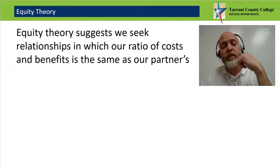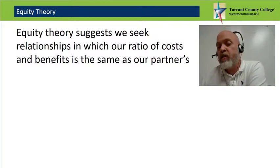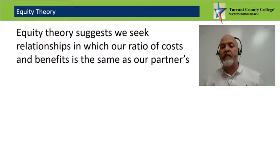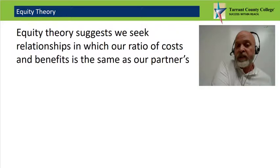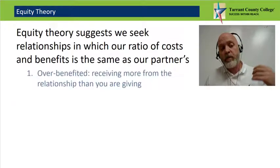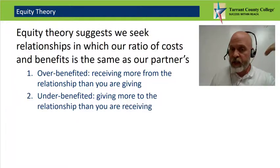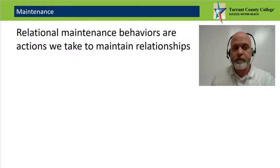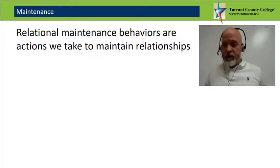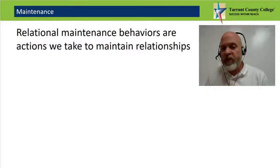Equity Theory also seeks to explain how we form and maintain social relationships. It borrows the concepts of costs and rewards from social exchange theory and extends them by defining a good relationship as one in which your ratio of costs to rewards is equal to your partner's. You can be over-benefited — receiving more than you give — or under-benefited — giving more than you receive. Relationships are maintained through relational maintenance behaviors including positivity, openness, assurances, social networks, and sharing of tasks.